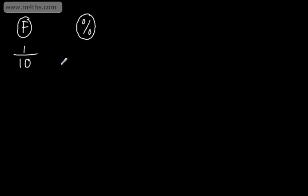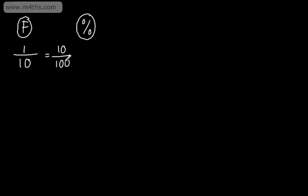If not, what we can look to do is write an equivalent fraction. Percentage means out of 100. So if I can write this fraction as an equivalent fraction out of 100, we can quickly find the percentage. I've got 10 in the denominator — what would I have to do to make that 100? I would need to multiply it by 10. Therefore, if I multiply the denominator by 10, I need to multiply the numerator by 10. So I get 10 in the numerator and 100 in the denominator. A percentage is out of 100, so 10 out of 100 gives me 10%. So 1 tenth is equivalent to 10%.